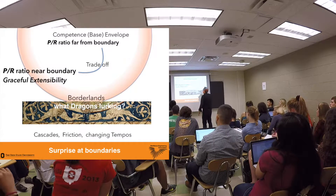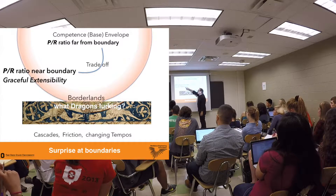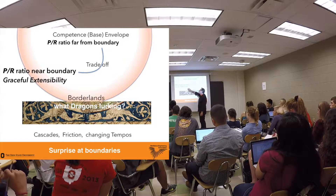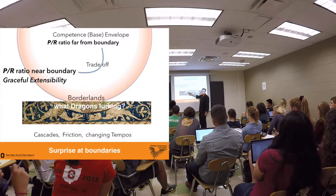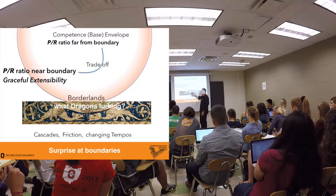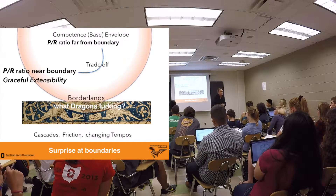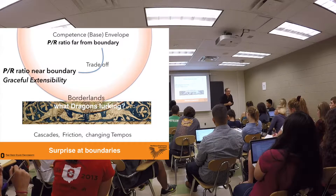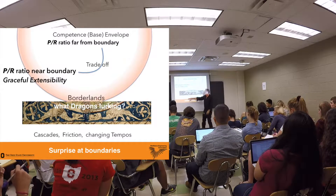So what we end up with is: competence envelope, graceful extensibility, borderlands, range of adaptive behavior, dragons. What are the dragons? They are the shape of surprise. I don't know the details, but I can say something about them. Examples.